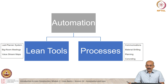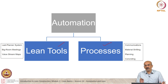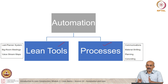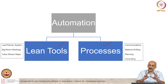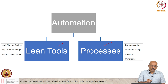When we look at it from an automation perspective, we have lean tools and we have processes. We are familiar with the tools — the last planner system, big room meetings, value stream maps. We have covered a lot of the tools. We also understand that lean is all about processes: communication process, material shifting, planning — there are detailed processes, there are macro processes. We talked about micro and macro.